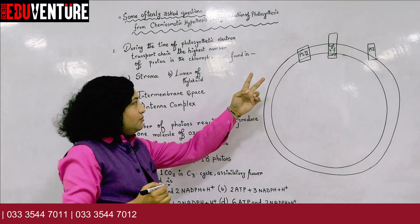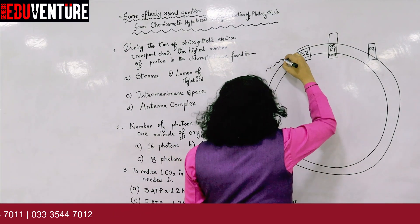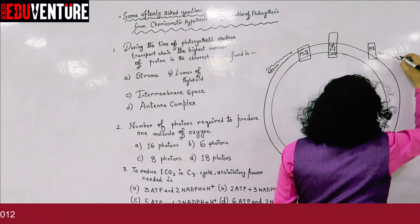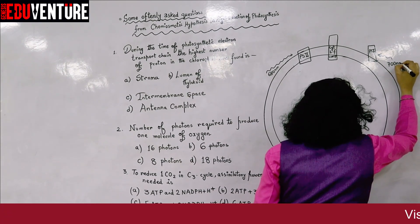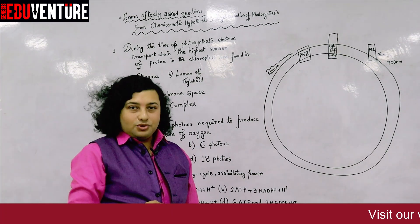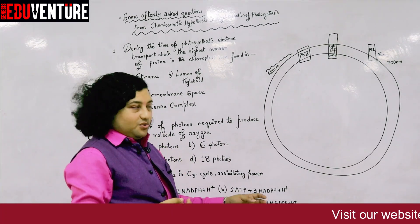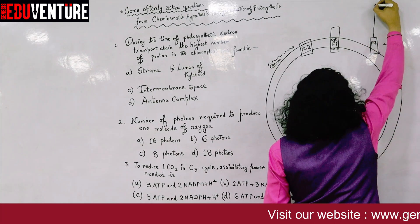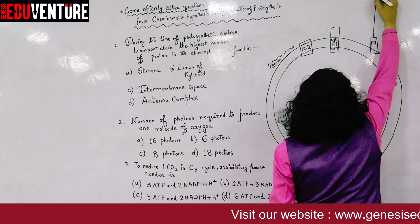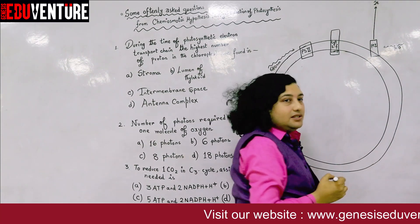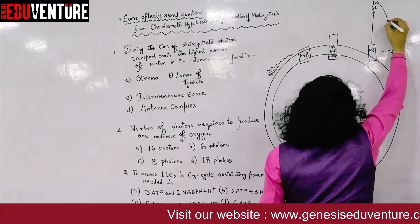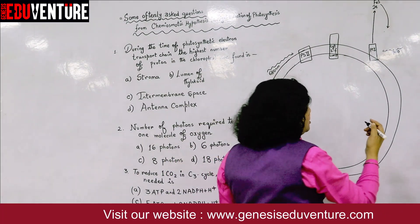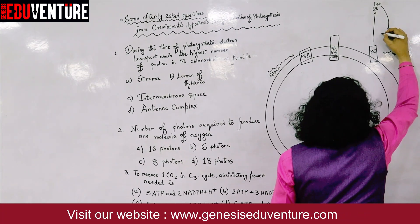As both photosystems get excited — PS2 at 680 nm and PS1 at 700 nm — they lose electrons. From PS1, as it gets excited, electrons are extruded and accepted by FES, the iron sulfur cluster. From the iron sulfur cluster, the electron moves to ferredoxin due to its greater redox potential. There are two molecules of ferredoxin.